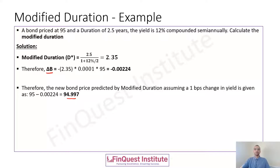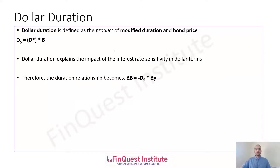To measure interest rate sensitivity in dollar terms, there is a concept called dollar duration. Dollar duration is simply the product of modified duration and bond price: D* × bond price. The expected change in bond price delta B is then the dollar duration multiplied by the given change in yield.